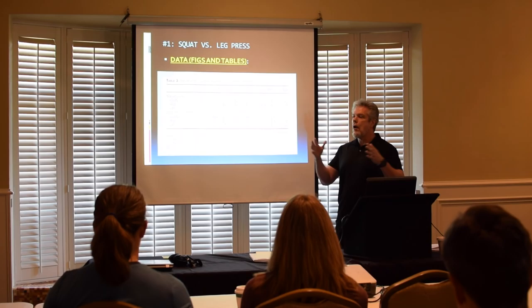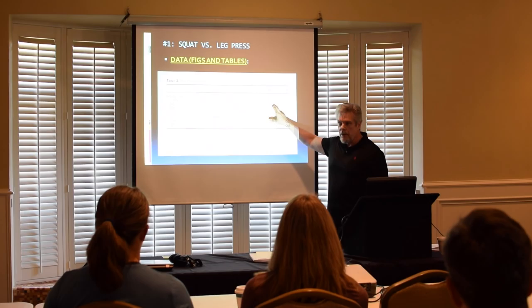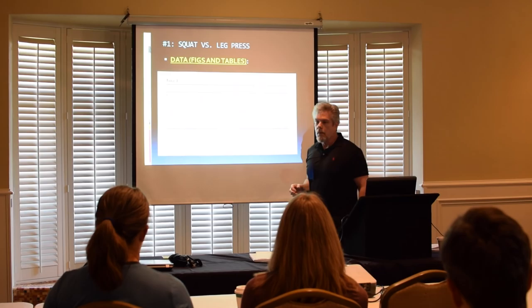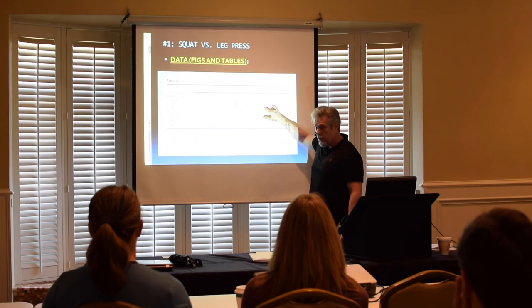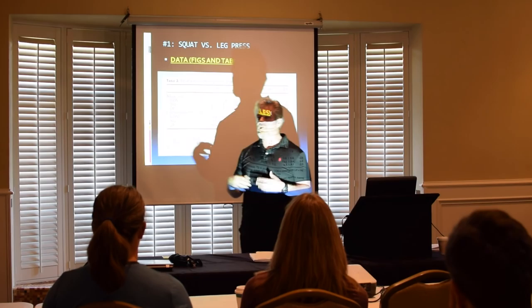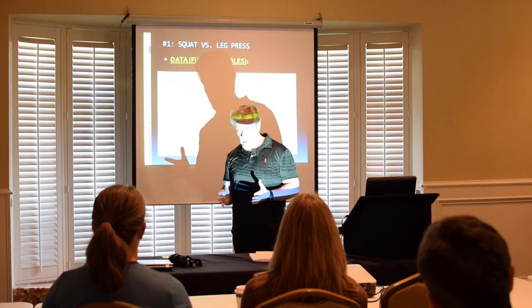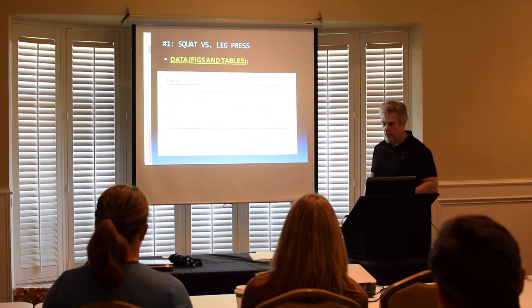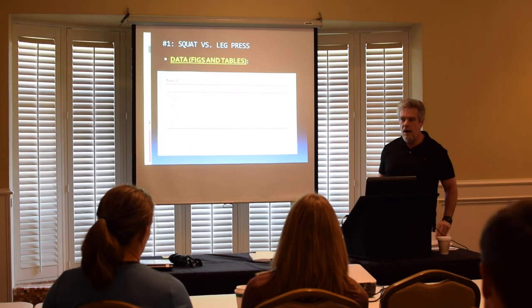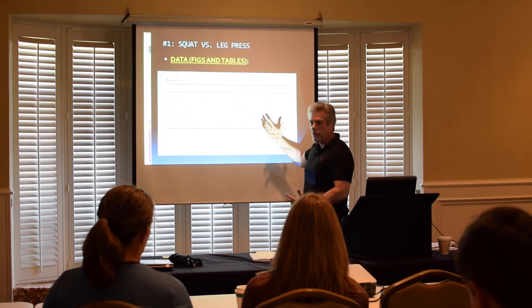Whenever you look at the confidence interval, the fact that the lower bound of the confidence interval for the squat jump does not cross zero tells you that you can be 95% sure that there was an actual training effect there. Whereas on all the other measurements, those lower bounds cross zero — so the researchers cannot say there's any training effect at all because they can't be 95% sure there was any improvement whatsoever.